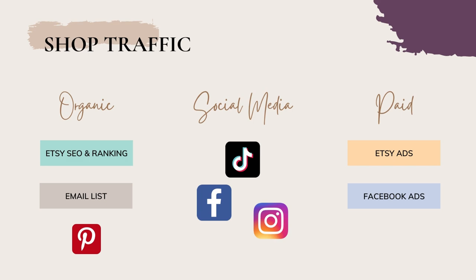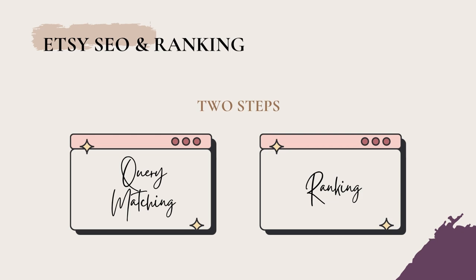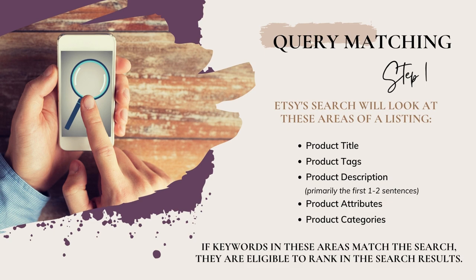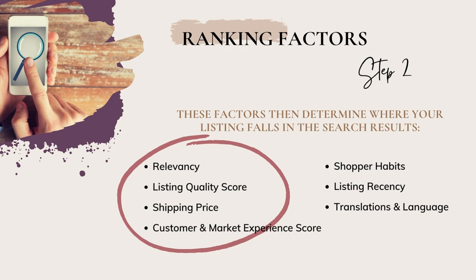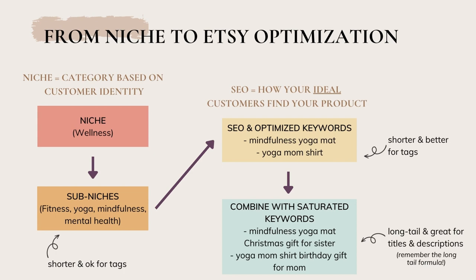With Etsy SEO and ranking, remember there were two key steps. The first was query matching, where Etsy search looks at keywords typed in and matches them in key areas of your shop like titles, tags, and description — making listings eligible to rank in search results. The second step is Etsy uses a variety of factors to determine where your listings fall in search results, including relevancy, listing quality score, shipping price, and customer and market experience. Organic traffic comes from your efforts to optimize your listings and shop using those strategies.